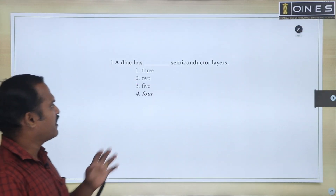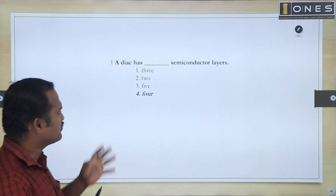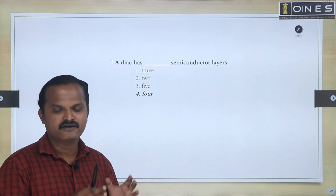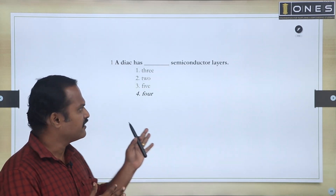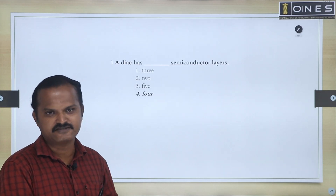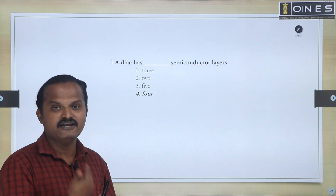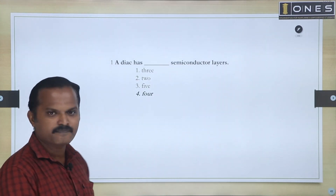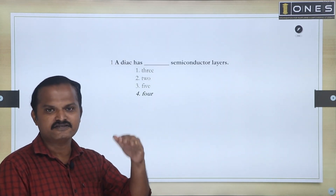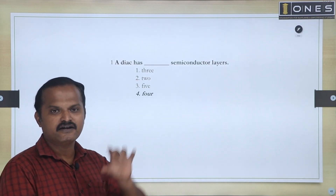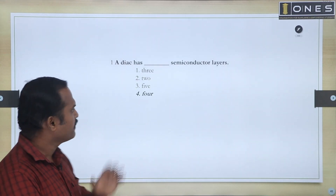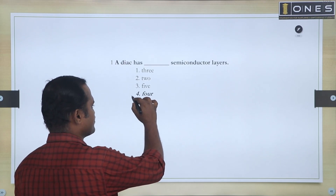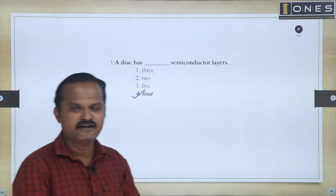A DIAC has how many semiconducting layers? If we look at the DIAC structure, it is an uncontrolled device with four semiconducting layers: P, N, P, N. So the answer is 4. A DIAC has 4 semiconducting layers.